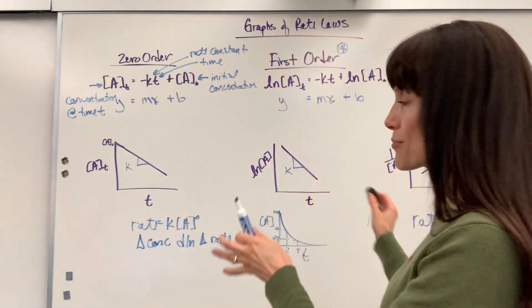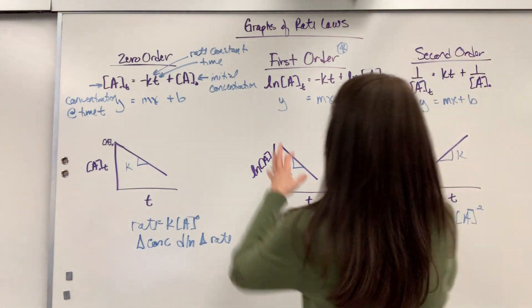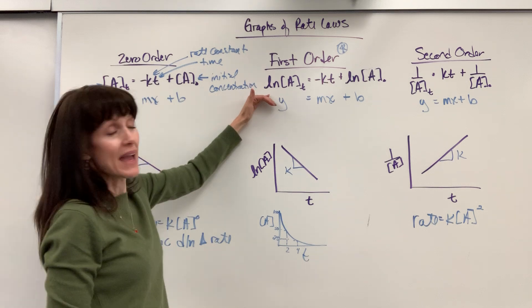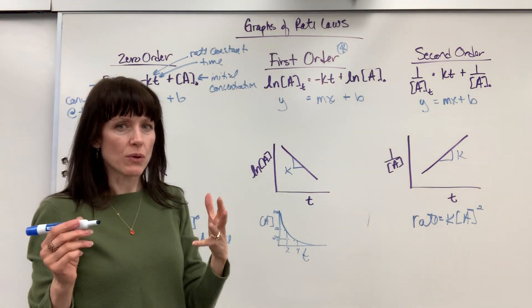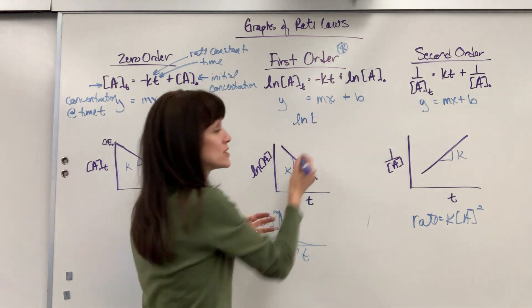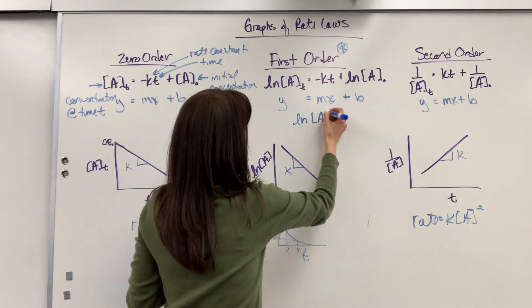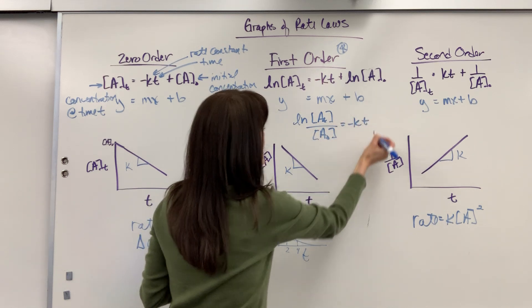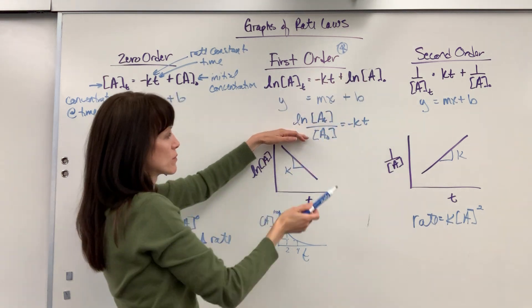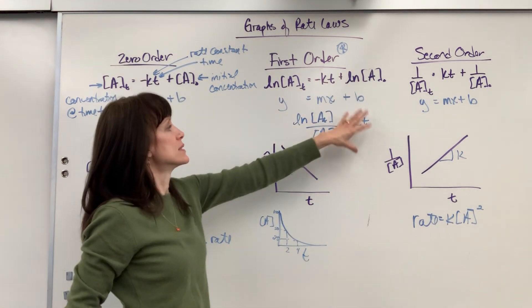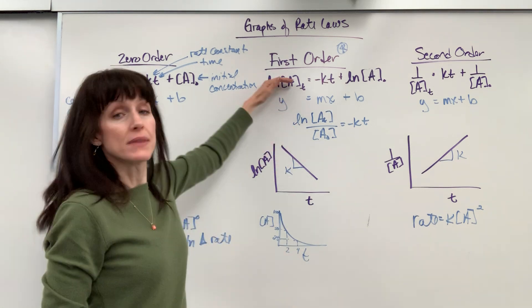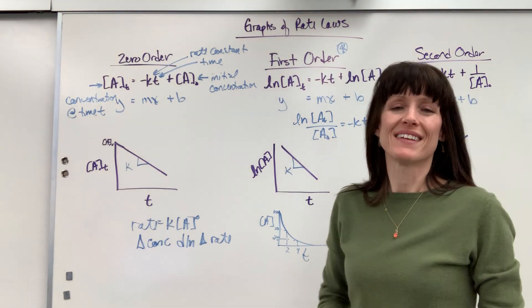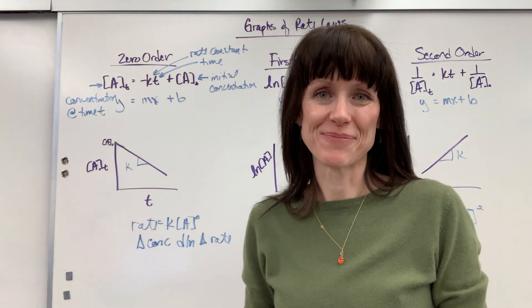Memorize those three graphs. One more thing I wanted to show you. If you rearrange this, if I were to subtract the A initial over, I want to show you how this is written. It would be natural log, and this is just using laws of logs, A of T divided by A naught equals negative KT. You will see this first order equation rewritten like this in textbooks. Same thing, don't let that throw you. If you have other questions on rate equations, look under my playlist for rate. Thanks.